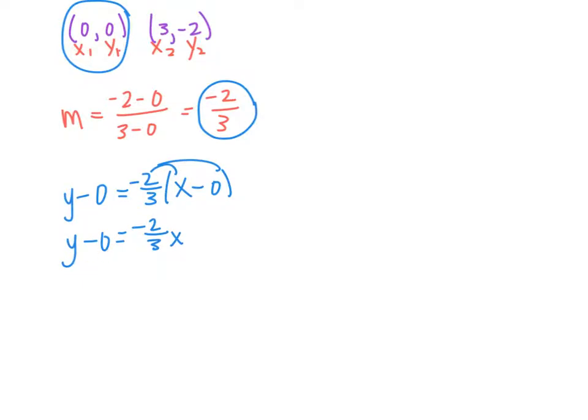And then this y minus 0, well that's just 0, so we have y is equal to -2/3 x. This is not a special equation, or a special line, because we have the x and the y. It looks a little different, because we're missing that y intercept.